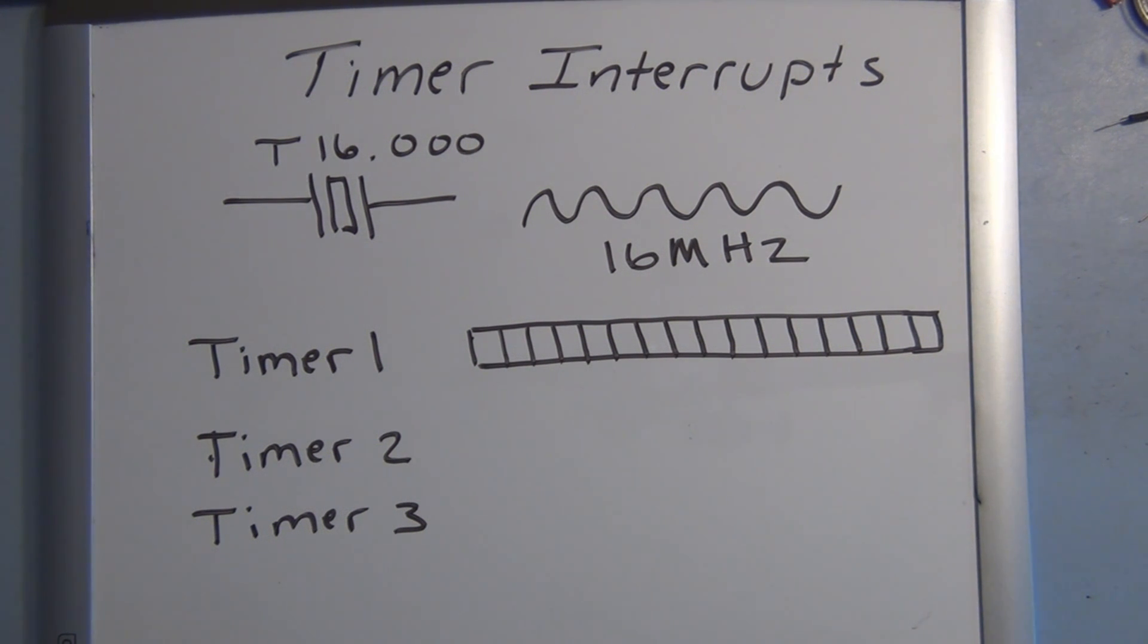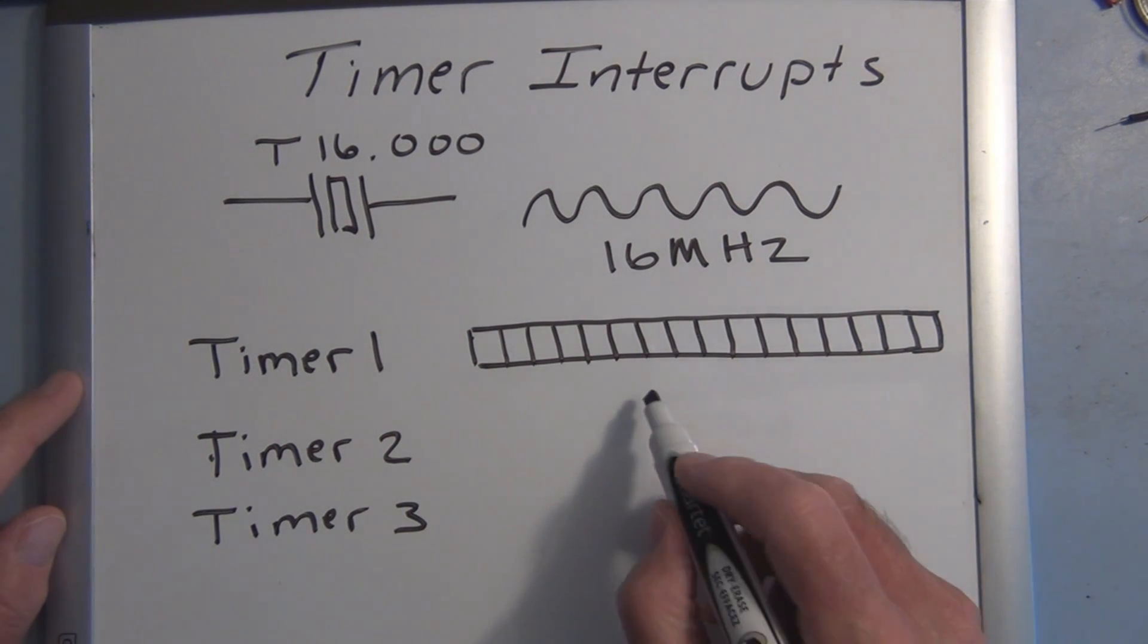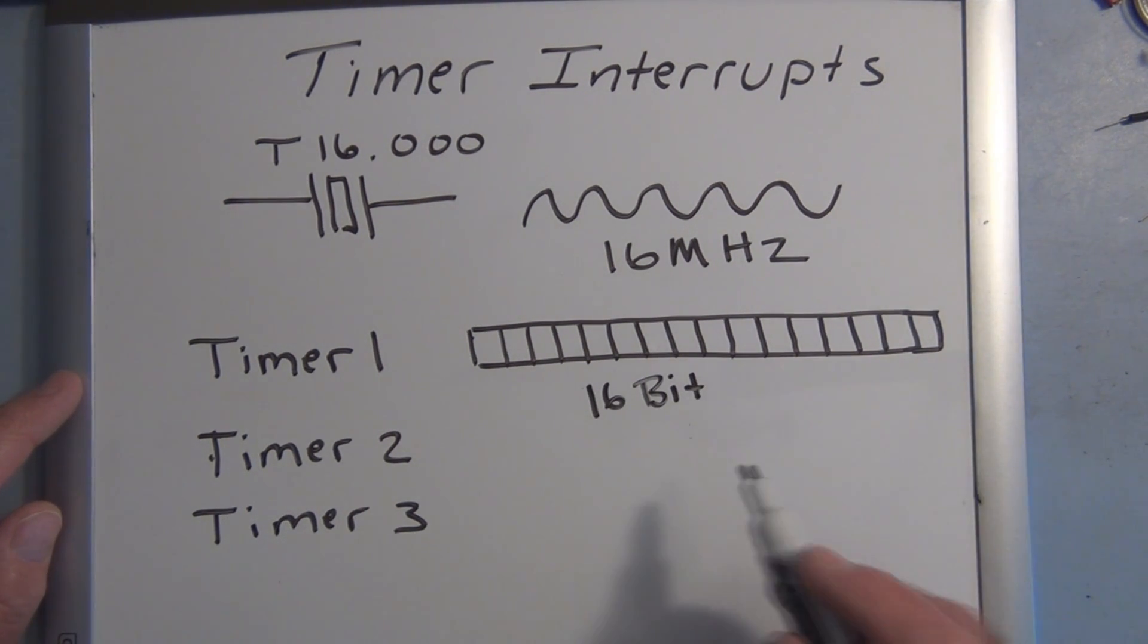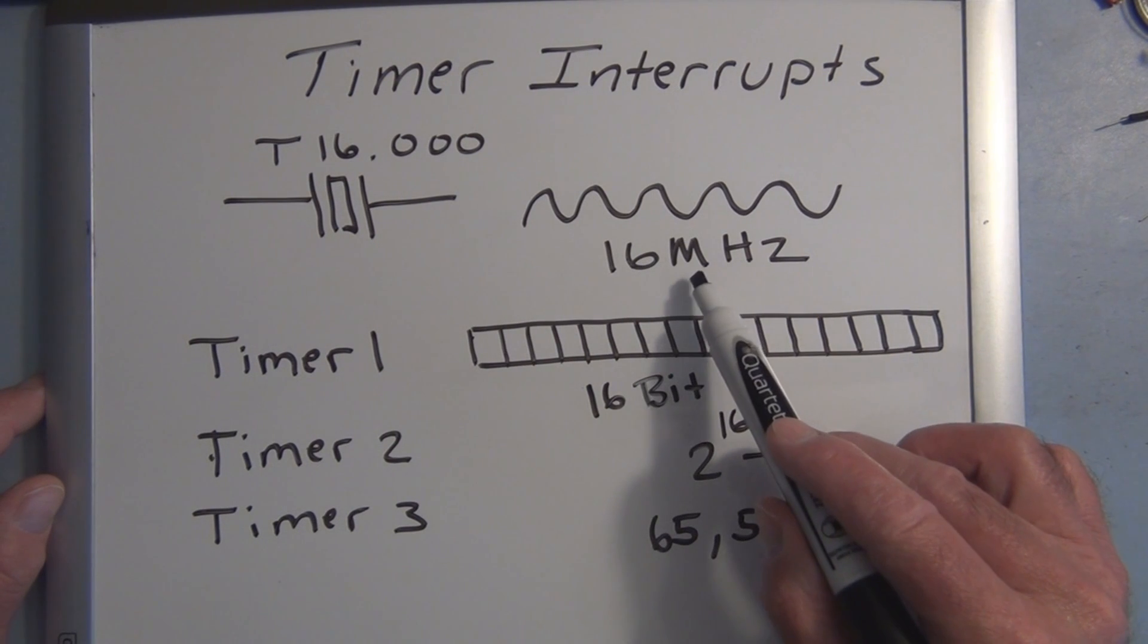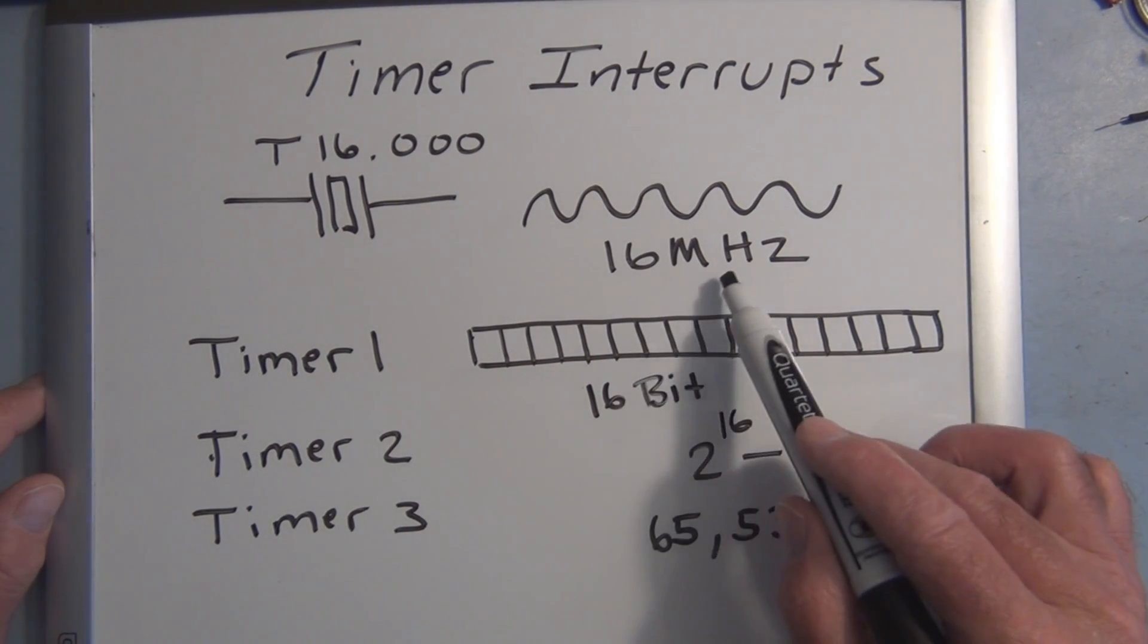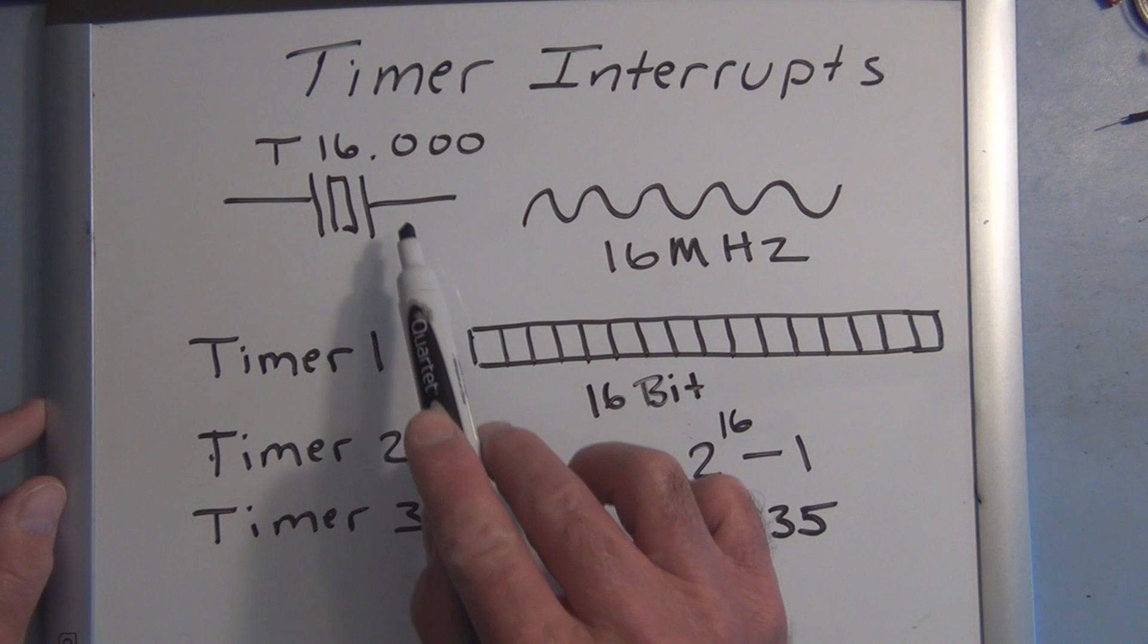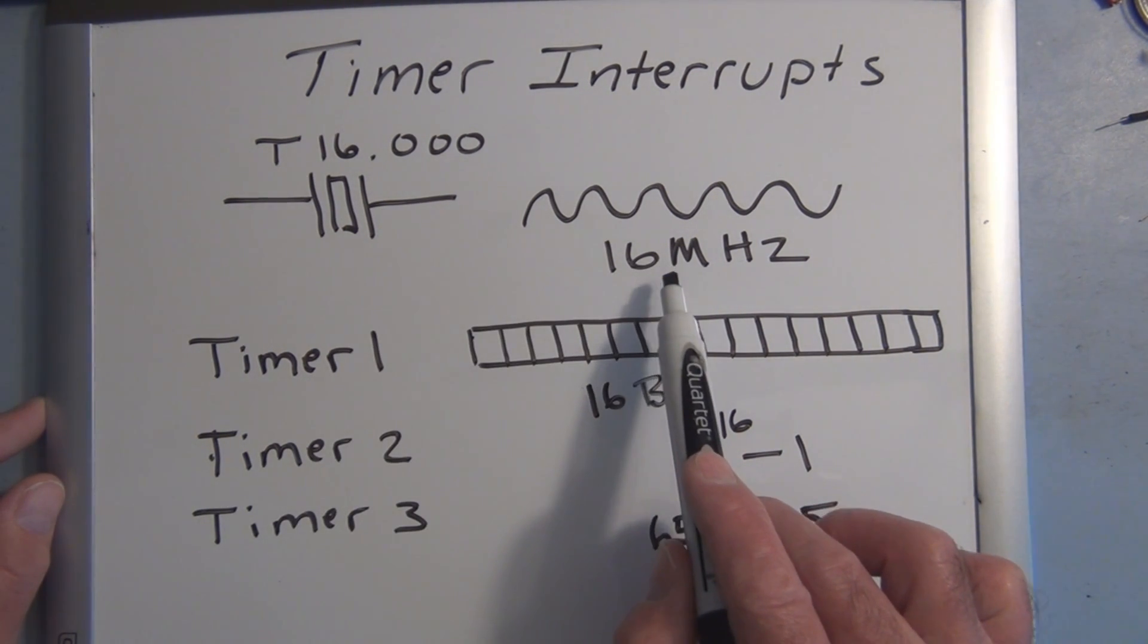Now on the ATmega microcontroller chip itself, there were three timers used for keeping track of time or timing. One is timer one and it's a 16-bit register. This has 16 bits, and if you have 16 bits you can count 2 to the 16 minus 1, which is 65,535.